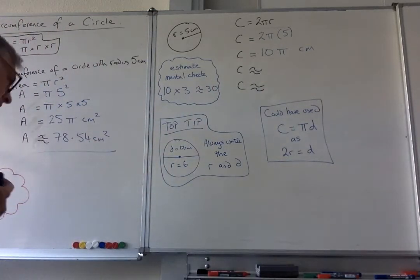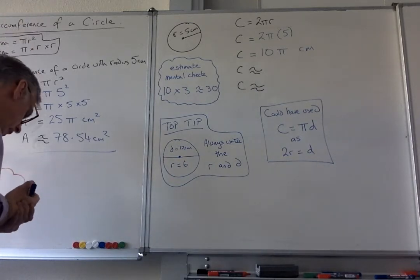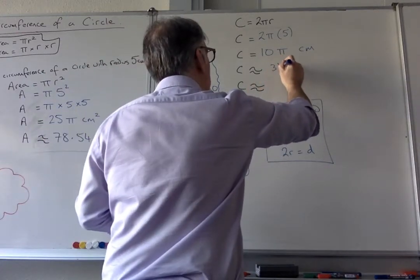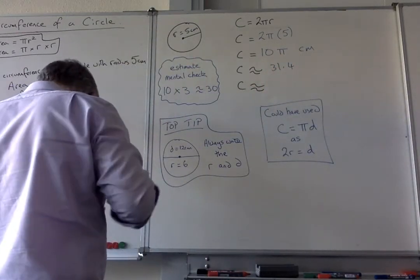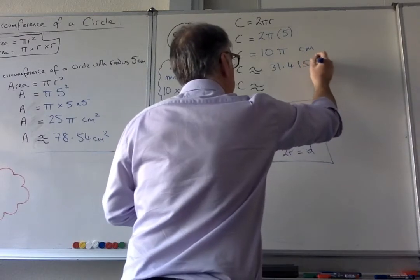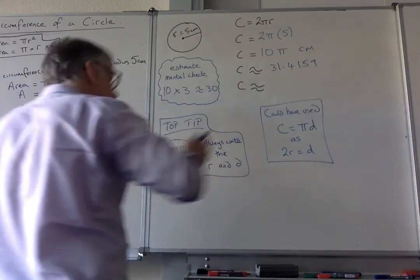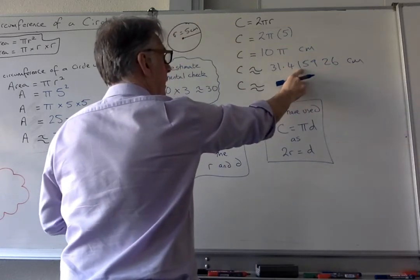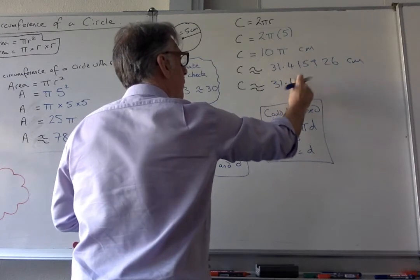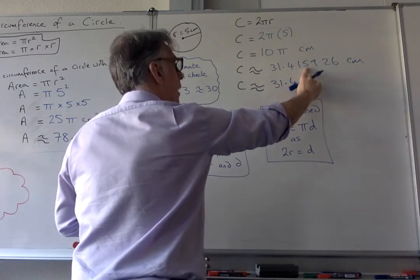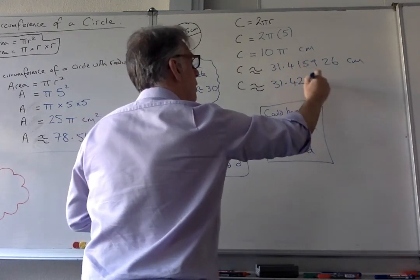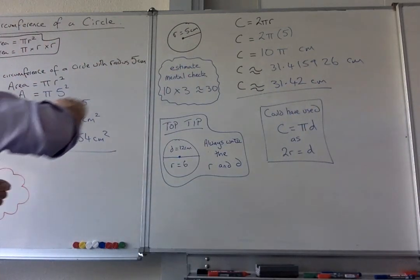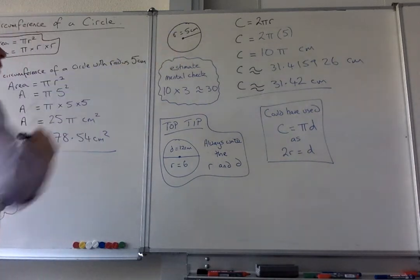And what I do is, I'll take my calculator, do 10 times π on it, and then I'm going to get the answer 31.4159265, but you wouldn't want to write such a long answer. So I'm going to do it to two decimal places. And when I do that, I have to look at the 5, and the 5 is going to round the 1 up to 2. And again, it's centimeters because it's a length, not an area, so it's a length, it's how far you've gone around the edge of the circle.